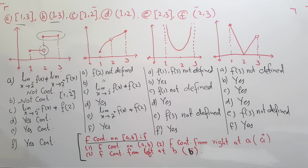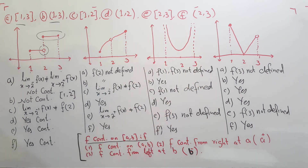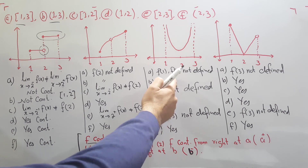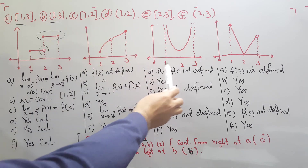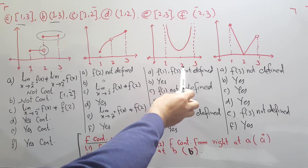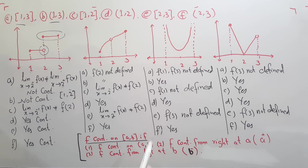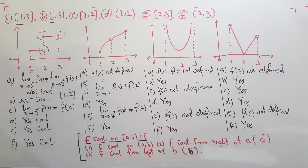Looking at the third graph, on the closed interval [1, 3], the function is not defined at 1 and not defined at 3, so the continuity condition fails and the function is not continuous. For the open interval (1, 3), since 1 and 3 are not included, the function is defined in between. For the closed interval [1, 2], f(1) is not defined, so the function is not continuous. For the open interval (1, 2), since 1 and 2 are not included, the function is defined and continuous.